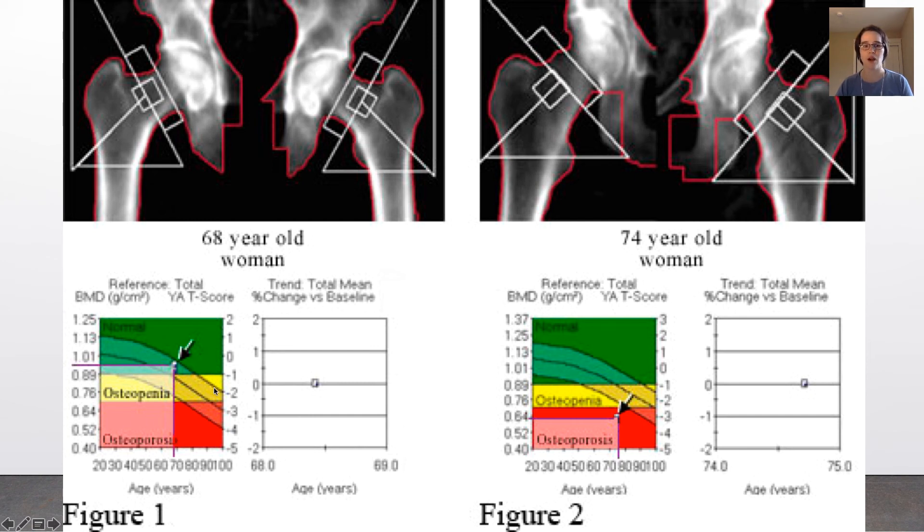And then these curves that go across the graph are the normal. The middle line is kind of the 50th percentile for the age range and then confidence intervals on that on either side of it. So, you can see that the 68-year-old woman falls within slightly on the higher side of her age range in terms of a normal distribution but falls within the normal bone mineral density range. So, she's healthy.